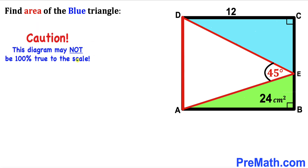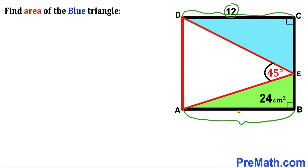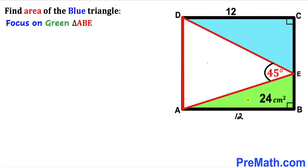Please keep in mind that this figure may not be 100% true to scale. Let's get started. We know this side length CD of this rectangle is 12, so therefore this side length AB of this rectangle is also 12 centimeters. Now let's focus on this green triangle ABE.